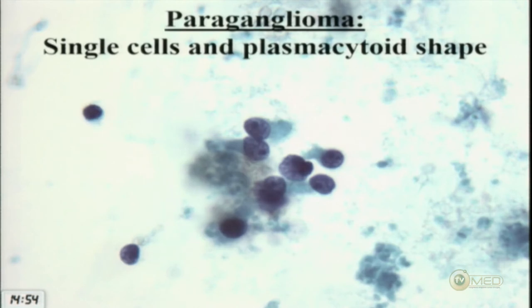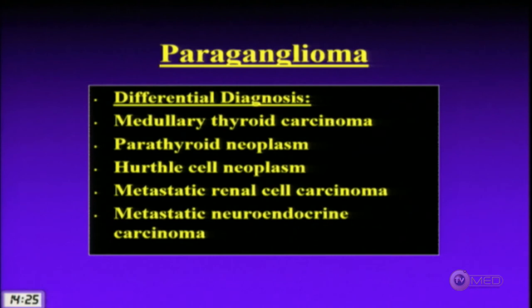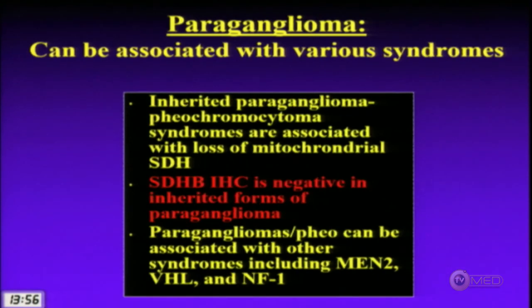Cytologically, paragangliomas typically show a single-cell pattern or very loosely cohesive groups with plasma cytoid shape and stippled salt-and-pepper chromatin — the classic neuroendocrine appearance. Ancillary studies are needed to make the diagnosis. The differential includes medullary carcinoma, parathyroid neoplasm, oncocytic/Hürthle cell neoplasm, metastatic renal cell carcinoma, and metastatic neuroendocrine carcinoma. Key IHC profile: keratin negative; negative for TTF1, thyroglobulin, calcitonin, and PTH; positive for chromogranin, synaptophysin, and NSE; rare sustentacular S100-positive cells.